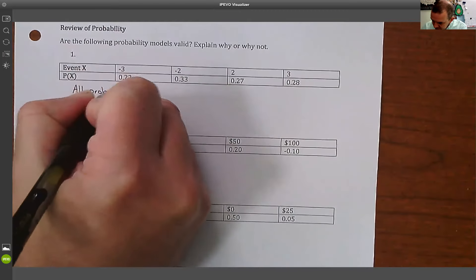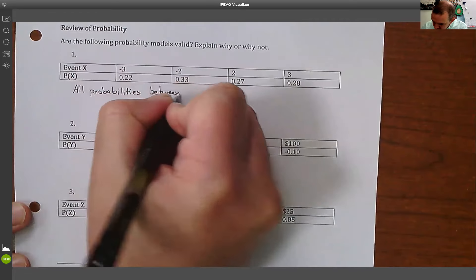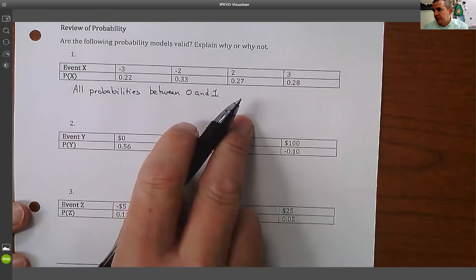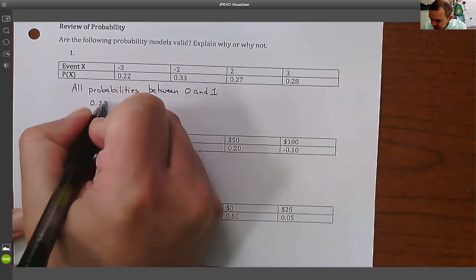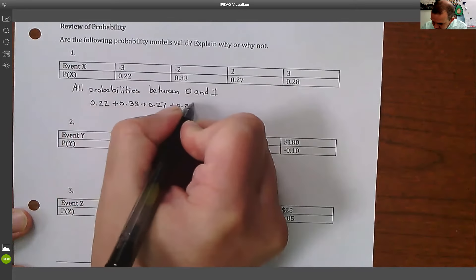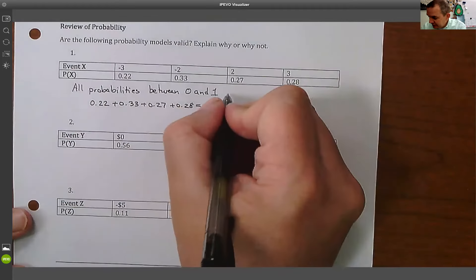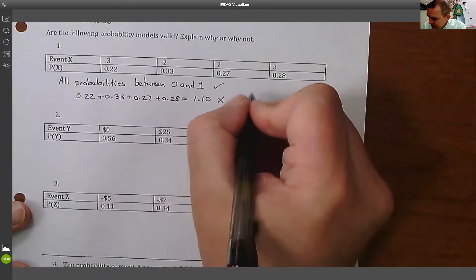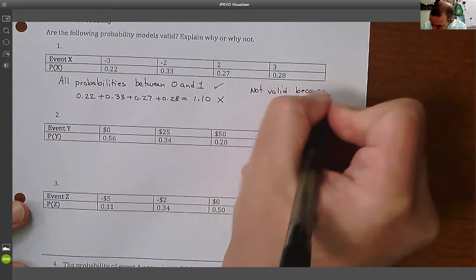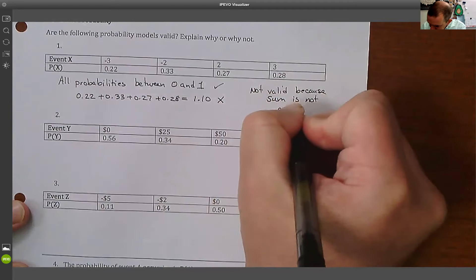All the probabilities are between 0 and 1. Now the next thing we need to check is whether those sum up. So we do 0.22 plus 0.33 plus 0.27 plus 0.28. If we add those up, we get more than 1. So this is not valid because the sum is not equal to 1.